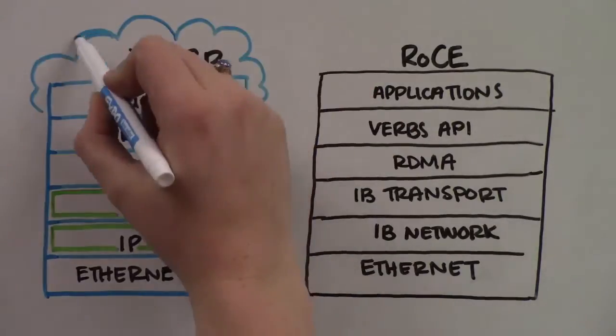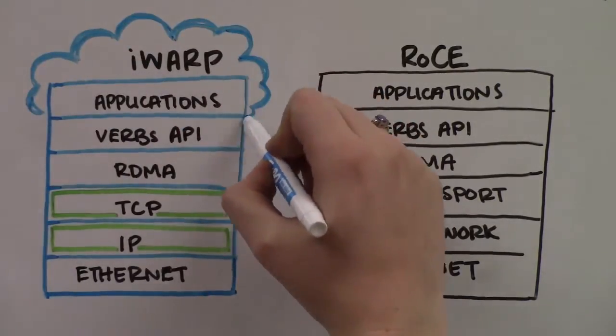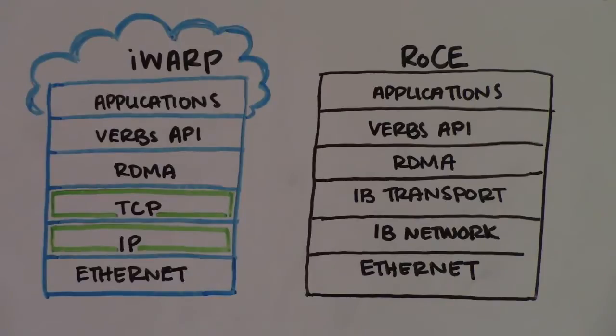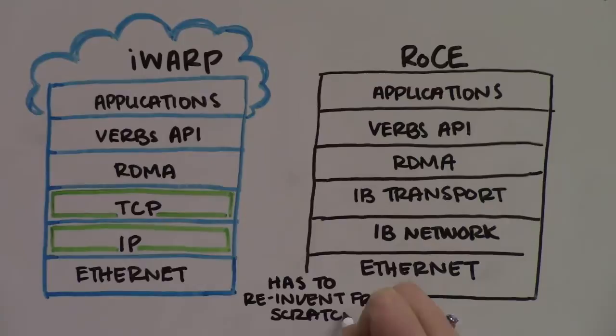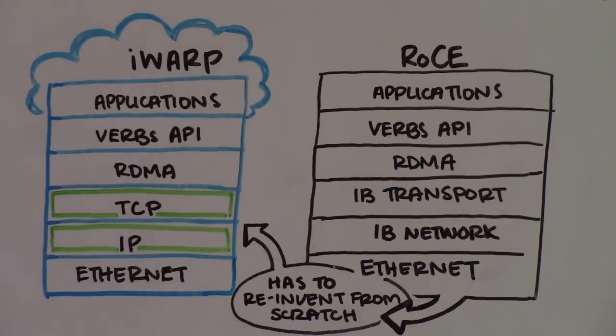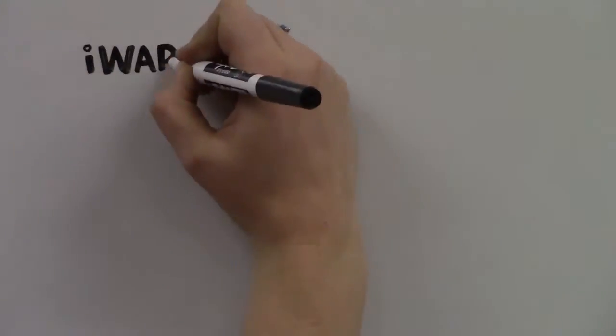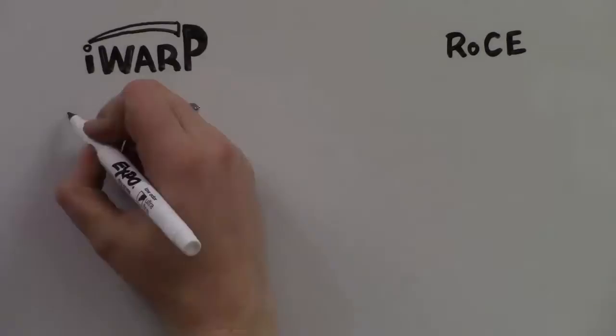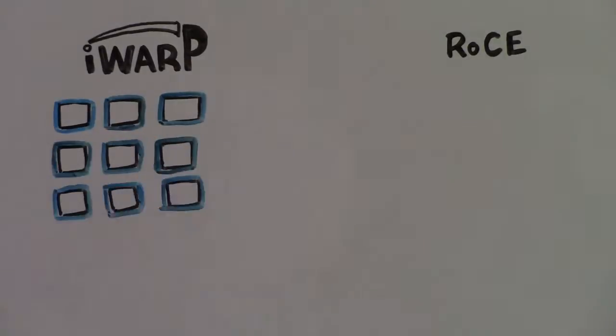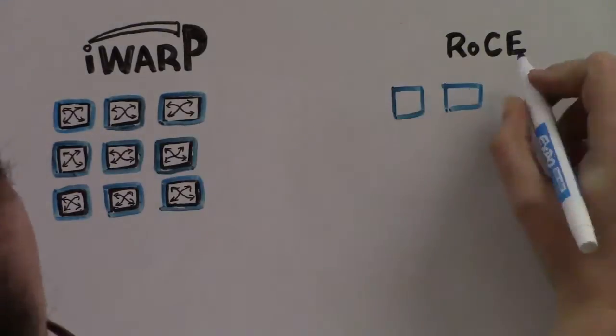iWARP is a scalable, cloud RDMA that goes anywhere the Internet goes. Although RoCE uses the physical layer and the media access layer from Ethernet, it differs by building an InfiniBand network and transport layer on top of them. So RoCE has to reinvent all the richness of TCP/IP from scratch. Intel sees several fundamental advantages in iWARP over RoCE because iWARP leverages mature and scalable TCP/IP technology.